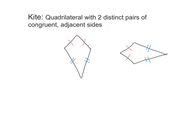Okay, this is 4.2b, kites. A kite is a quadrilateral with two distinct pairs of congruent adjacent sides.